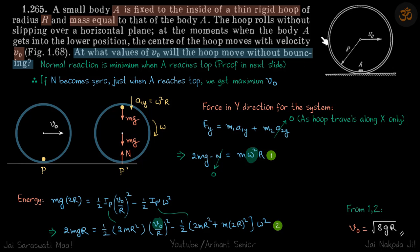We have a small body A that is fixed to the inside of a hoop. The mass of A is the same as the mass of the hoop, and the center of the hoop is traveling with velocity v₀ initially, when mass A is at the bottom. At what values of v₀ will the hoop move without bouncing?